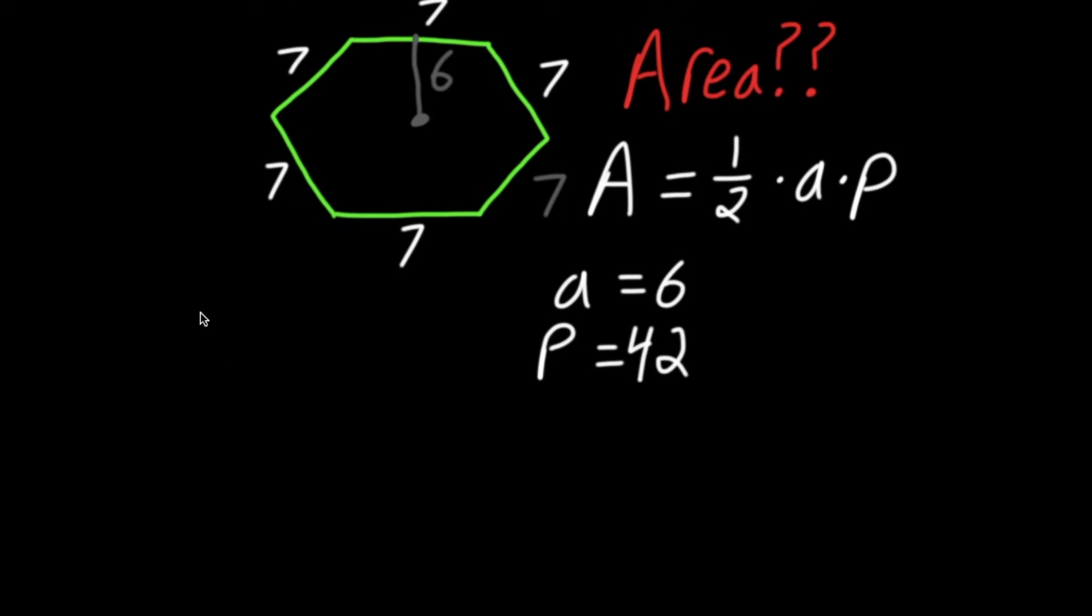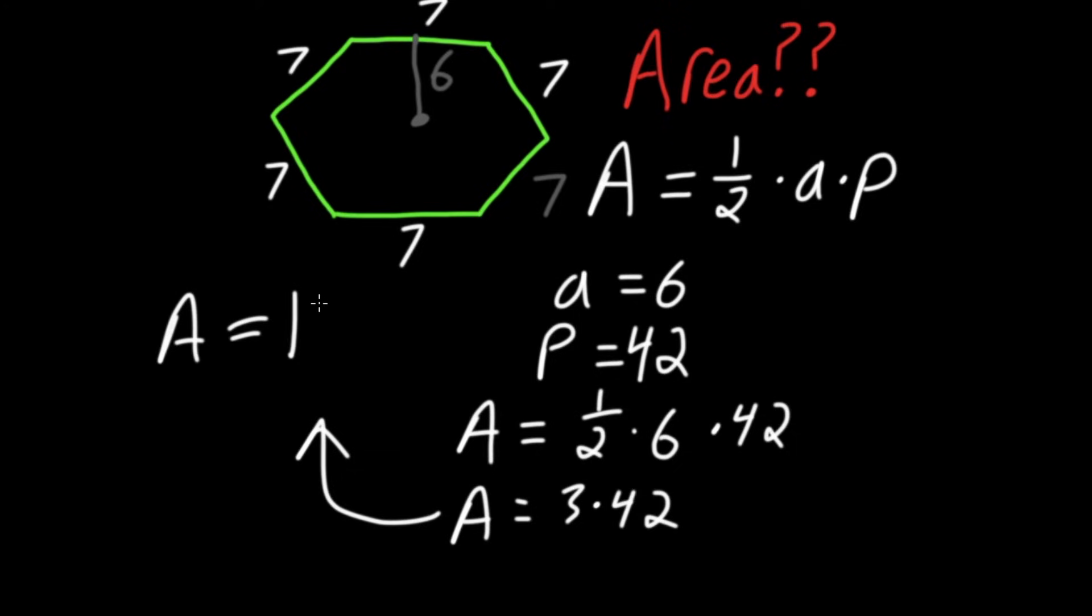Now, our new formula becomes A equals one-half times six times 42. One-half times six is three. So we have three times 42. And three times 42 is 126.